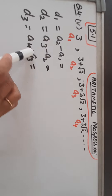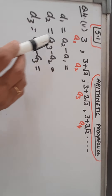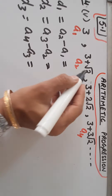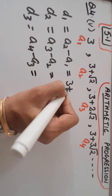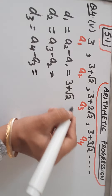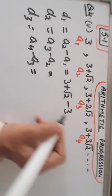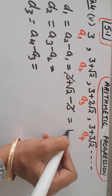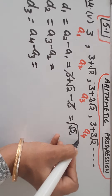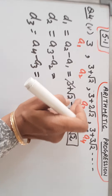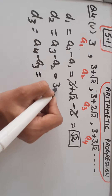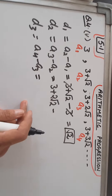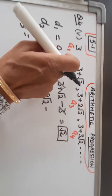So let us find out whether this is an AP or not by finding the difference between consecutive terms. A2 is 3 plus root 2, then minus A1 which is 3. By solving: plus 3 and minus cancel out, giving root 2 as the first difference. Then A3 is 3 plus 2 root 2 and we subtract A2. As you can see, these terms are binomials.